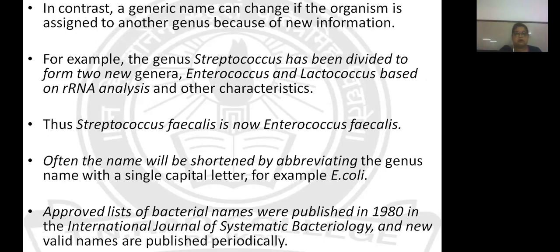So this is all about taxonomic rank, the prokaryotic species, the role of species and genus names in binomial nomenclature, the role of the type strain for naming different strains, and BioVar, MorphoVar and Serovar — the differences in strains present within the same species. It is one of the important topics to study before we start with classification. Thank you.